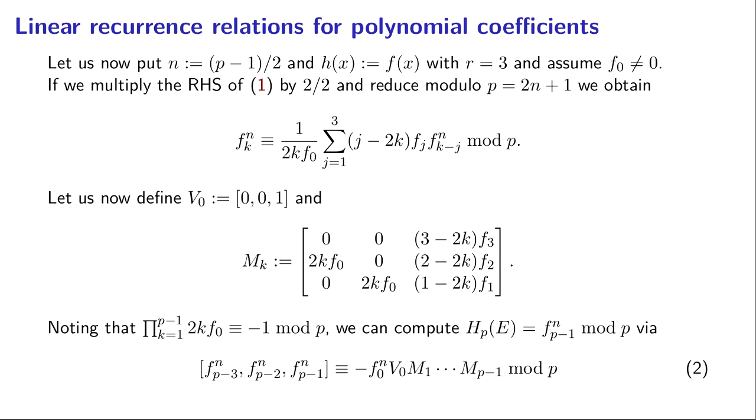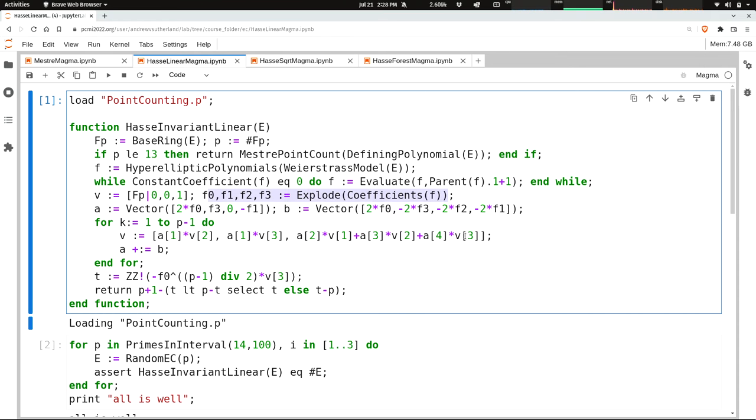And that'll be important in the next algorithm we look at. The idea of thinking of this, even though we're instantiating k going from 1 to p-1, it's helpful to sort of switch perspective and think of this as maybe a matrix over a polynomial ring in k whose entries are linear polynomials in k that we're then instantiating. I'll leave it as an exercise. You can check that I'm doing the right thing here, that it matches what's on the screen.